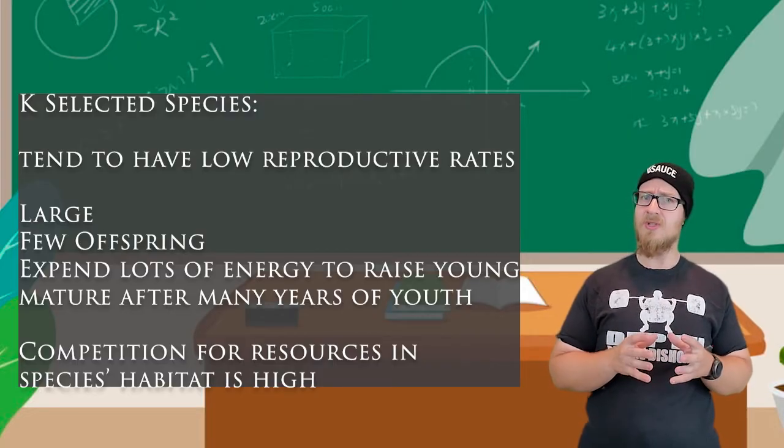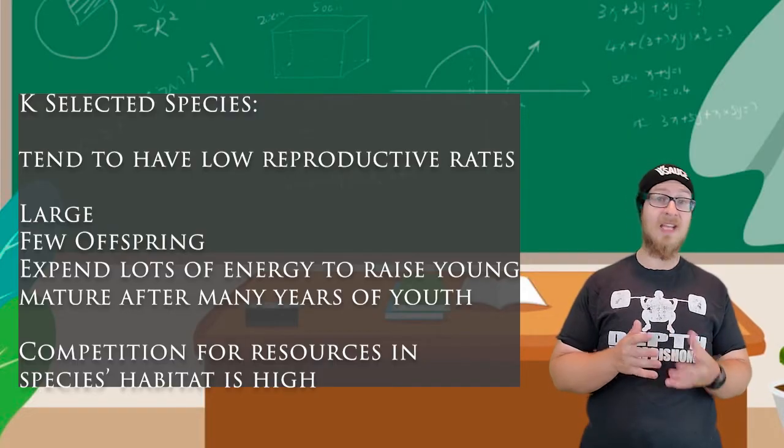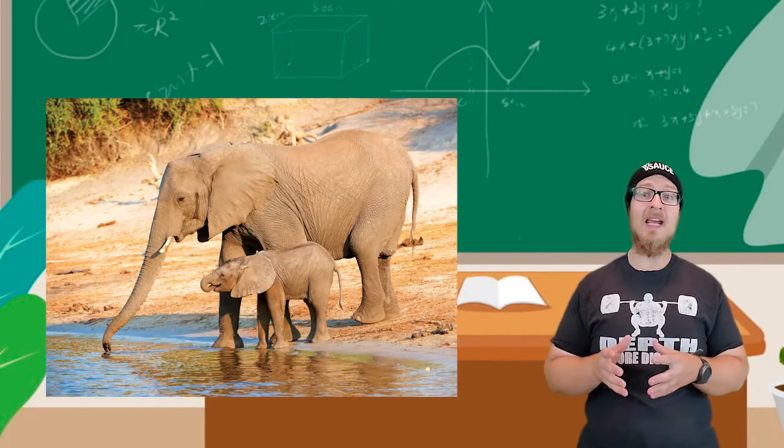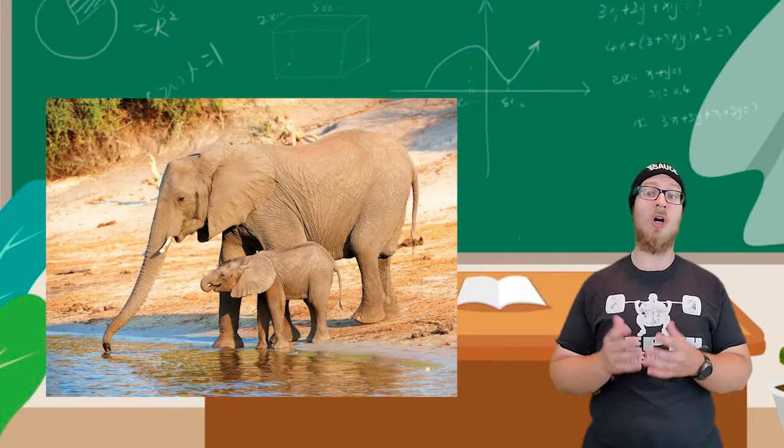Competition for resources in K-selected species' habitat is usually relatively high. An example of a K-selected species are elephants.